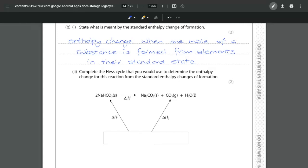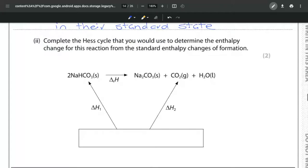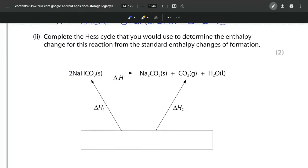For part two, we want to complete the Hess cycle that we would use to determine the entropy change for this reaction from the standard entropy changes of formation. We have to think about what elements are actually present here. If I just make it a bit bigger you can see that we have got some sodium...